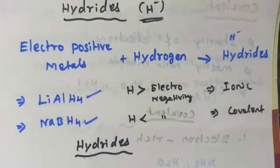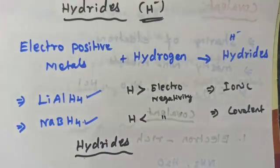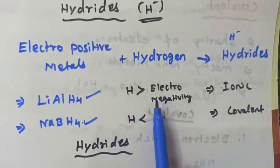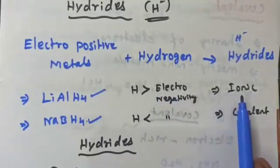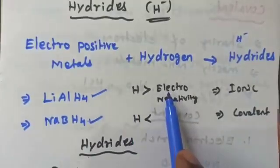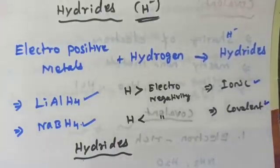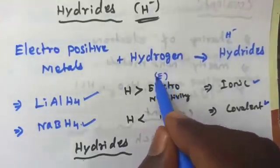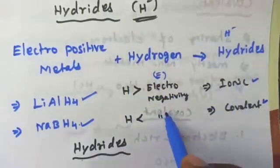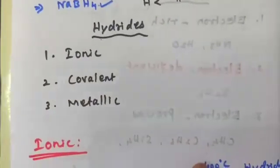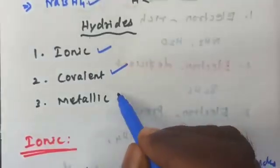Metal plus hydrogen forms hydrides. Hydrides are classified into three types: ionic, covalent, and metallic. Ionic hydrides are formed with elements having lower electronegativity than hydrogen. Elements having higher electronegativity than hydrogen form covalent hydrides. So hydrides are classified into these three types: ionic hydrides, covalent hydrides, and metallic hydrides.